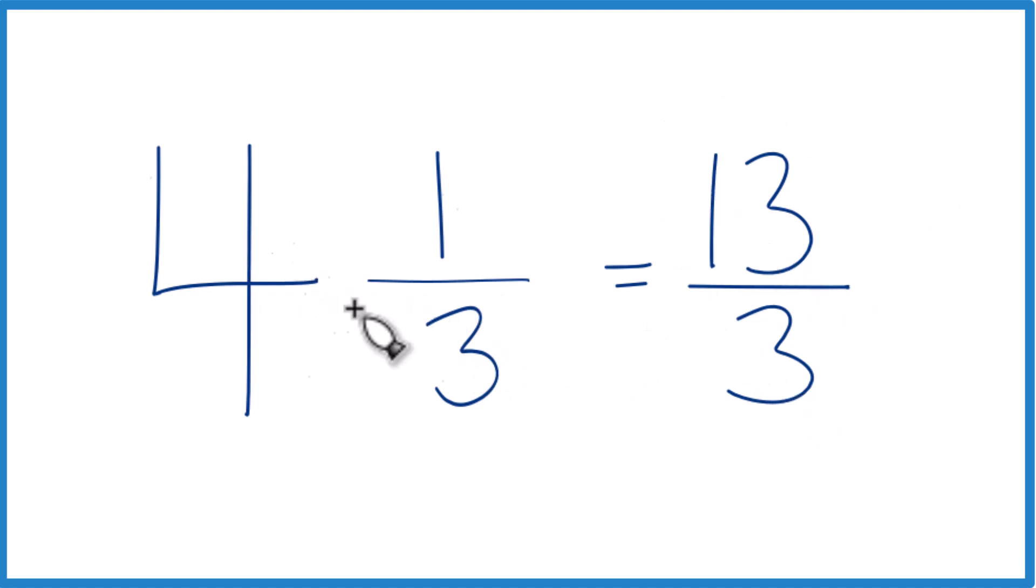Let's do it again. 4 times 3, that's 12. 12 plus 1, that's 13. That's our numerator. Bring the denominator across, and you got it.